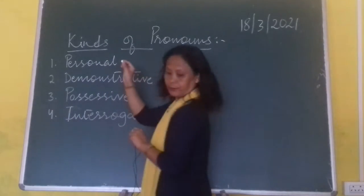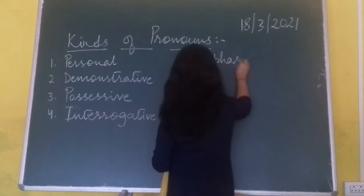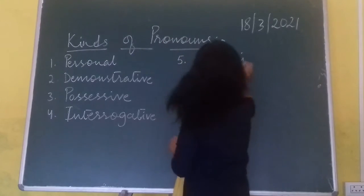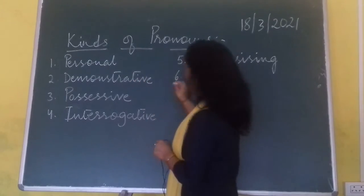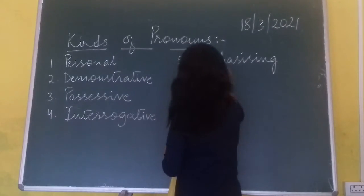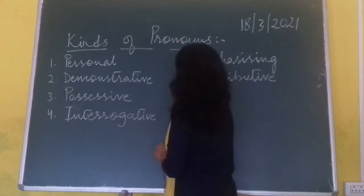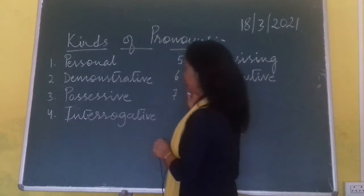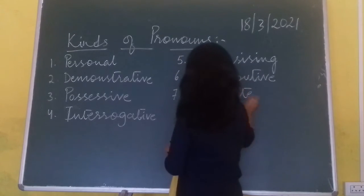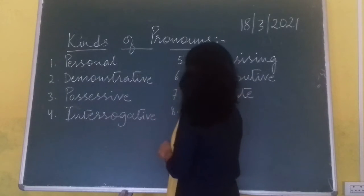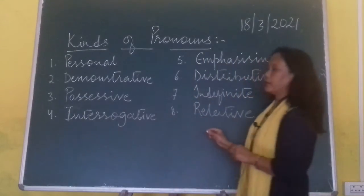Number five: emphasizing. Number six: distributive. Number seven: indefinite. And number eight: relative. So there are eight kinds of pronouns.